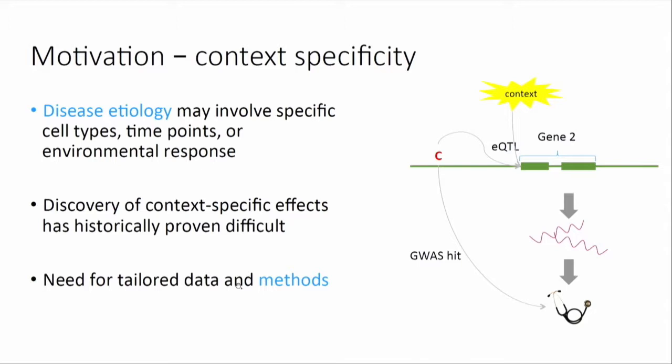This presents a big challenge. We don't have the ability to do EQTL studies in every possible context. We're starting to look at things like multiple tissues and multiple cell types, even using single-cell data. But all of this context-specificity does lead us to need very specific data in some cases, and also tailored methods for uncovering this context-specificity of these genetic effects.